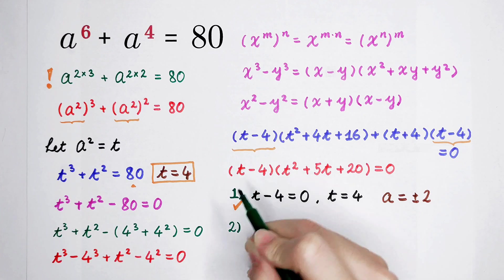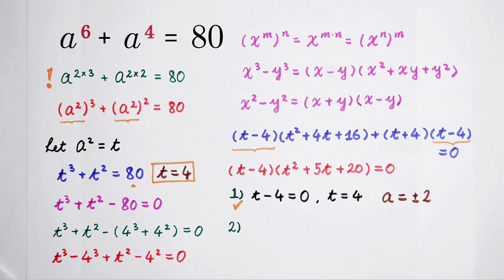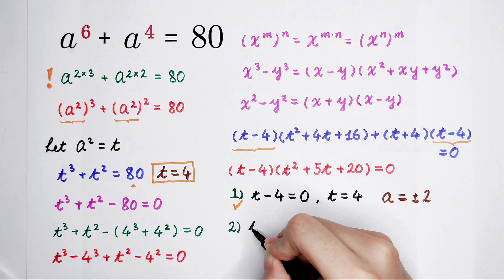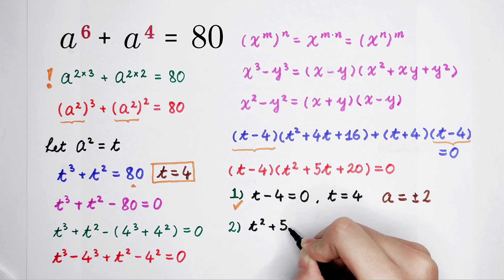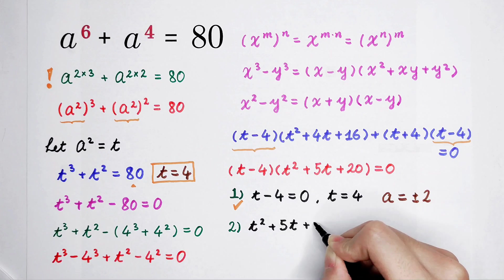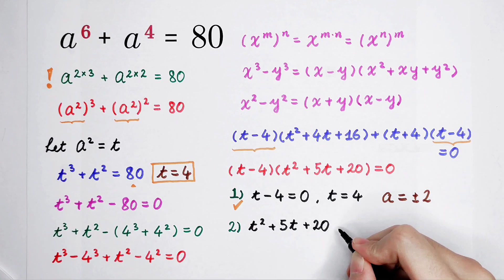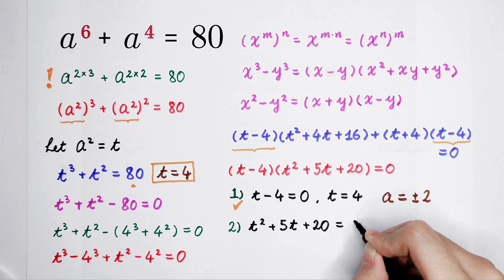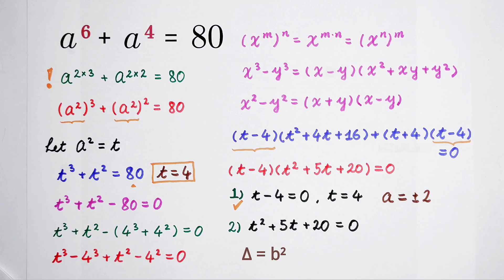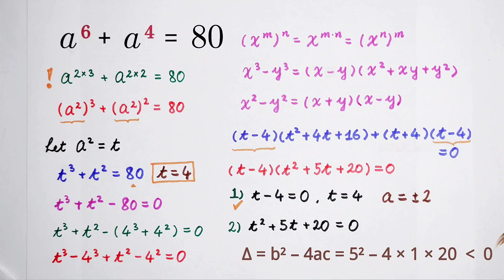The second case is a little complicated. t squared plus 5t plus 20 equals 0. The discriminant delta equals b squared minus 4c, which is less than 0, so there are no real roots in this case. And that's the complete solution. Give me a thumbs up, subscribe for more videos, and we'll see you next time. Bye-bye.